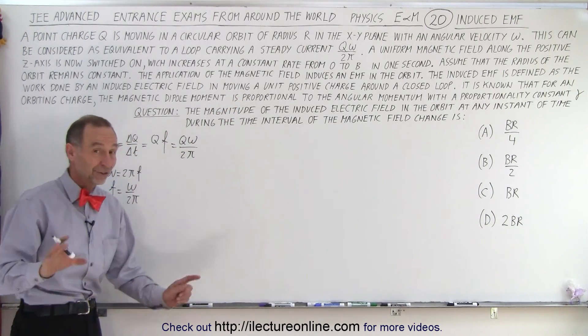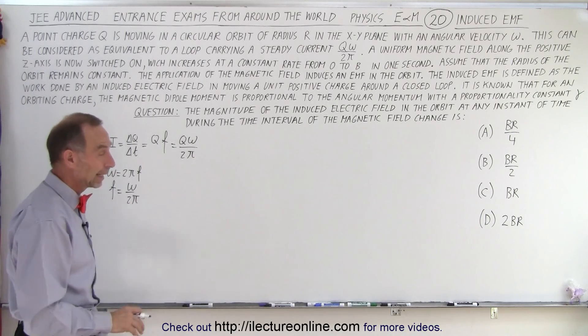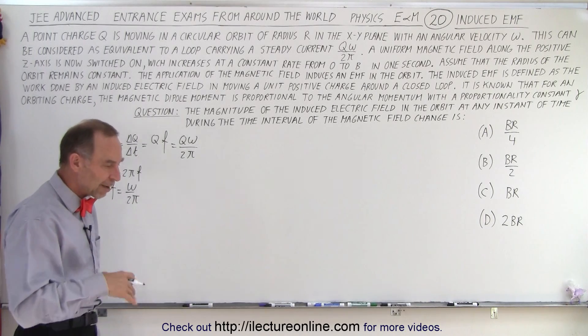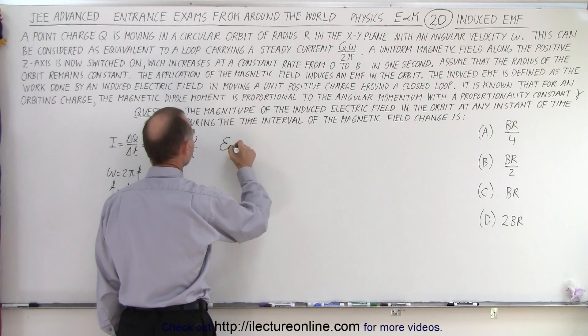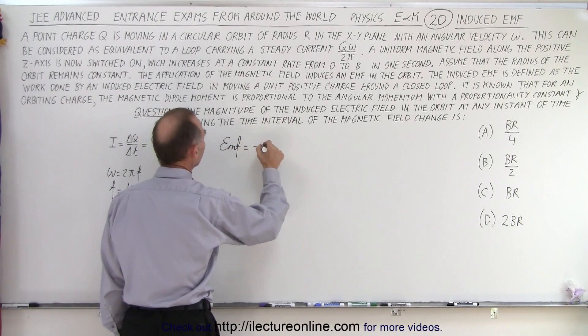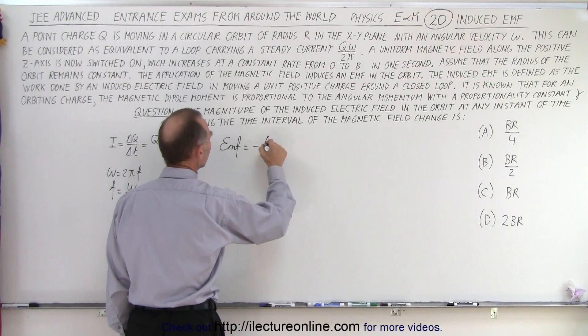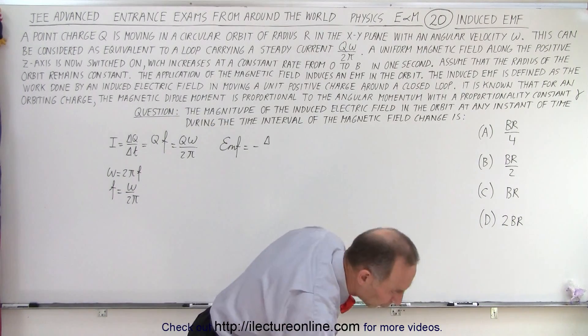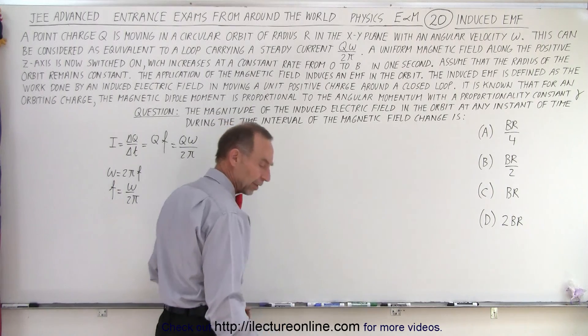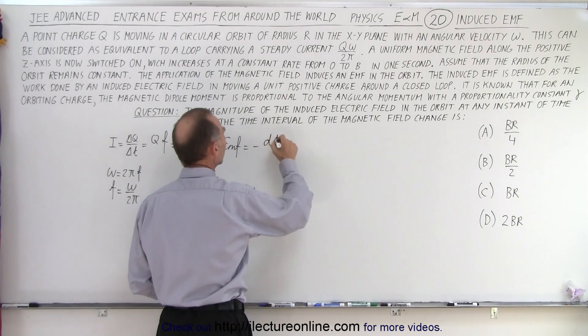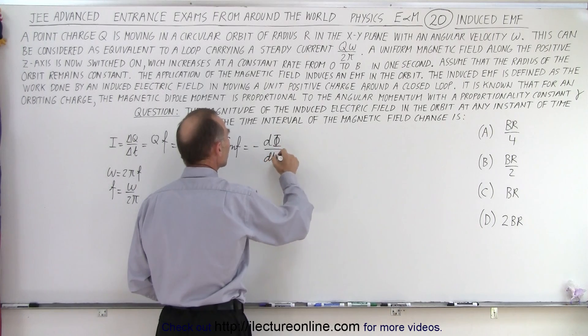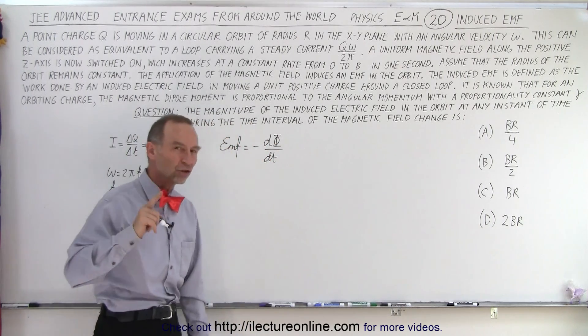Next what we're going to need is the definition of induced EMF. Induced EMF is equal to the negative change, and I should write it as a differential, so it's equal to the negative dΦ/dt, the amount of magnetic flux change inside the loop.